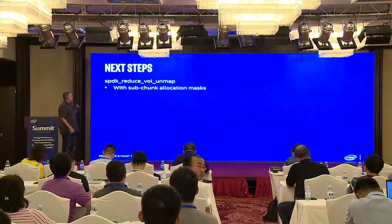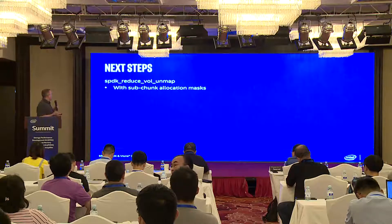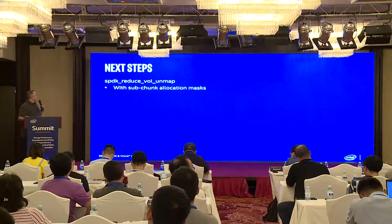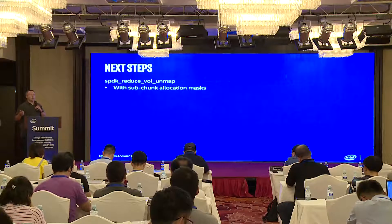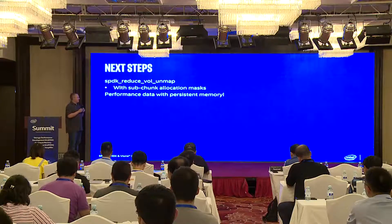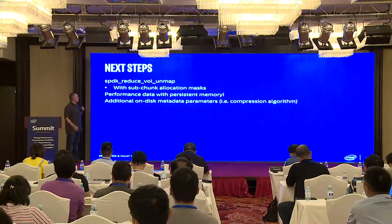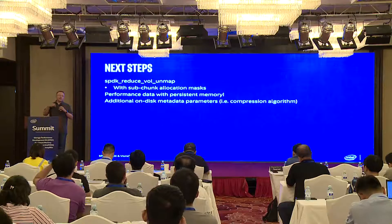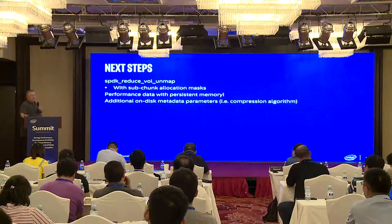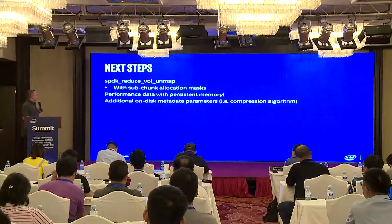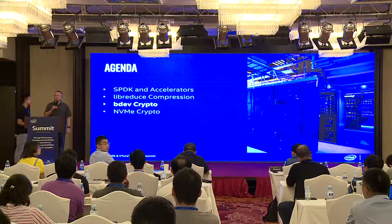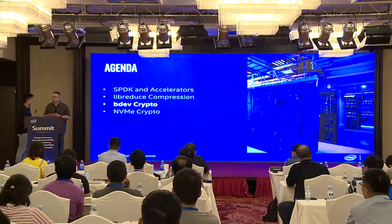Hopefully that gives you some examples of the power of using persistent memory for these types of algorithms. We've got a few things still to do. On the unmap operations there are things we can do to track sub-chunk allocations — when we write 4K of data, there's 12K that's unallocated, and we can get savings by tracking those. Another thing we get a lot of questions about is performance data — we're actively working on this. There are also additional on-disk metadata parameters to store; currently SPDK defaults to deflate, and we need to add on-disk metadata to support different algorithms and potentially compression levels. With that, I'm going to hand it over to Chiang, who will give more details on how we do crypto and encryption within SPDK.